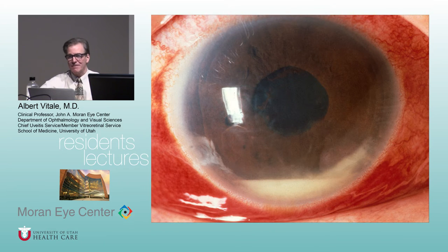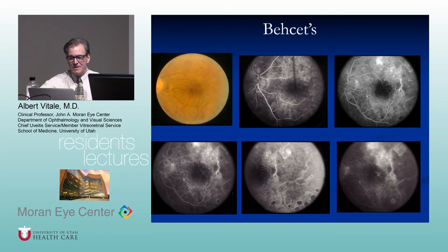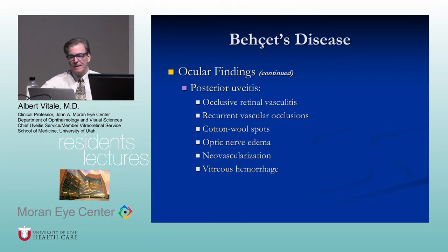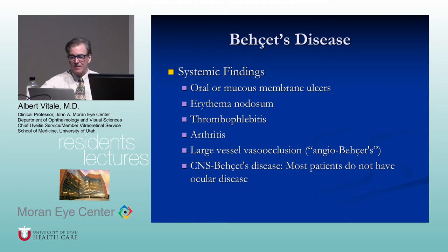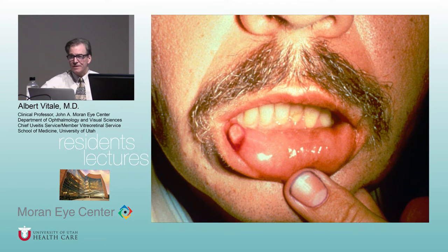Behcet's disease causing hypopyon uveitis and a vasculitis that is occlusive, with large areas of non-perfusion — which is prognostic for visual outcome — and chalky white areas of retinitis. Ocular findings: occlusive retinal vasculitis, vascular occlusion, Roth spots, neovascularization, and vitreous hemorrhage. 100% of patients have oral and mucous membrane ulcers. Erythema nodosum is classically described, though an acneiform follicular rash may be more common. Also thrombophlebitis, arthritis, large vessel occlusion including DVT, and CNS disease.